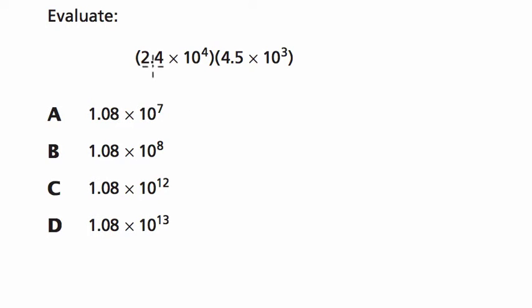So the way I would look at this is I would notice that we're multiplying 2.4 and 10 to the 4th and 4.5 and 10 to the 3rd. Well, one of the properties I'm definitely going to focus on here is the associative and commutative properties. Those properties tell me I can regroup and rearrange numbers when I'm multiplying.